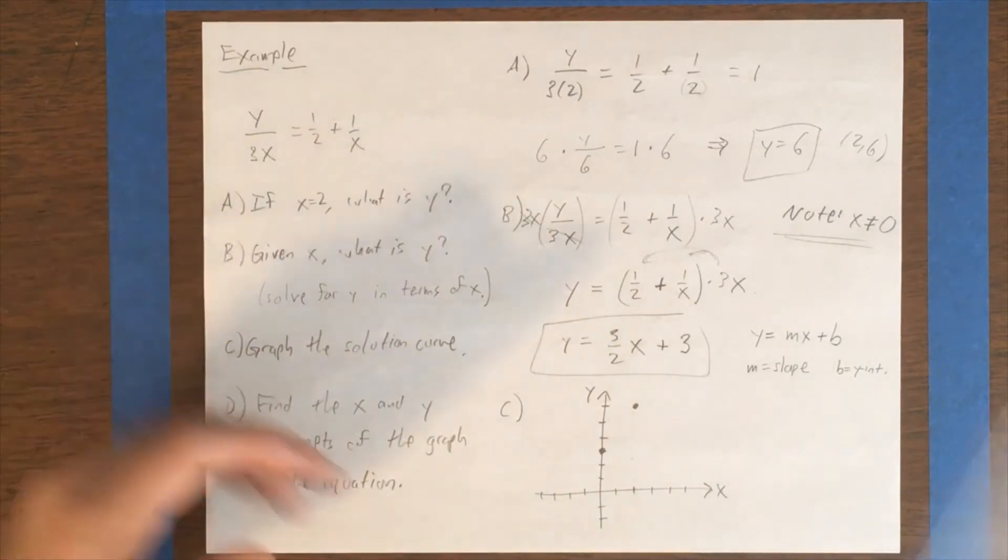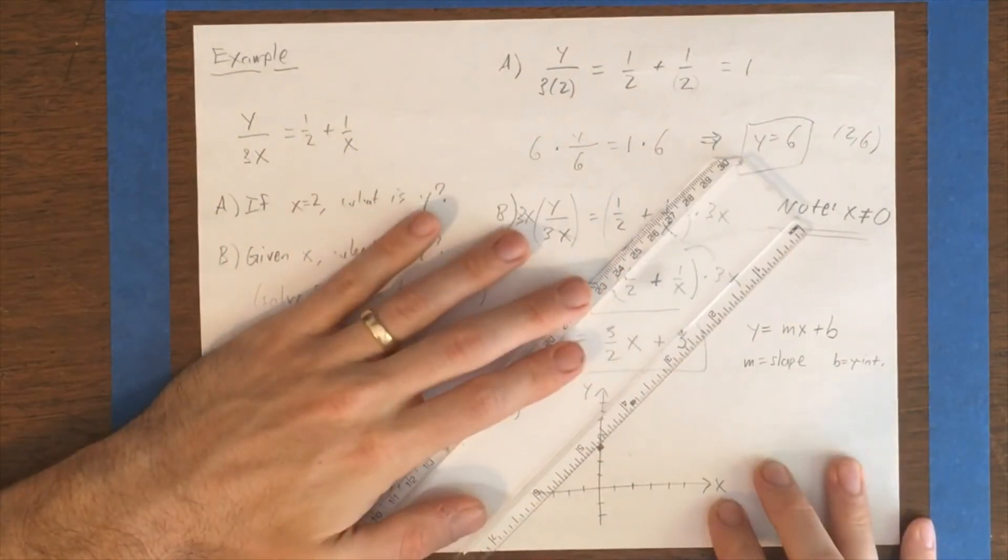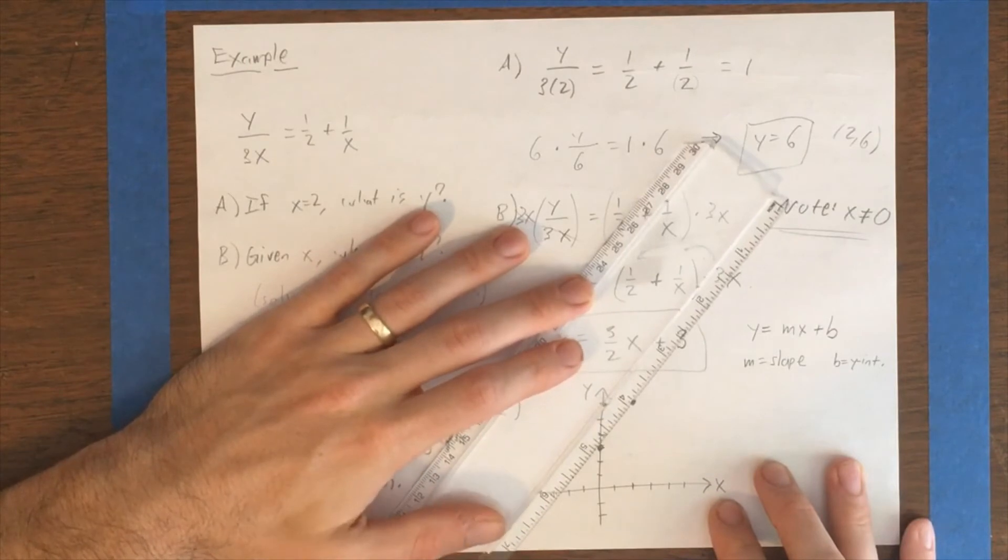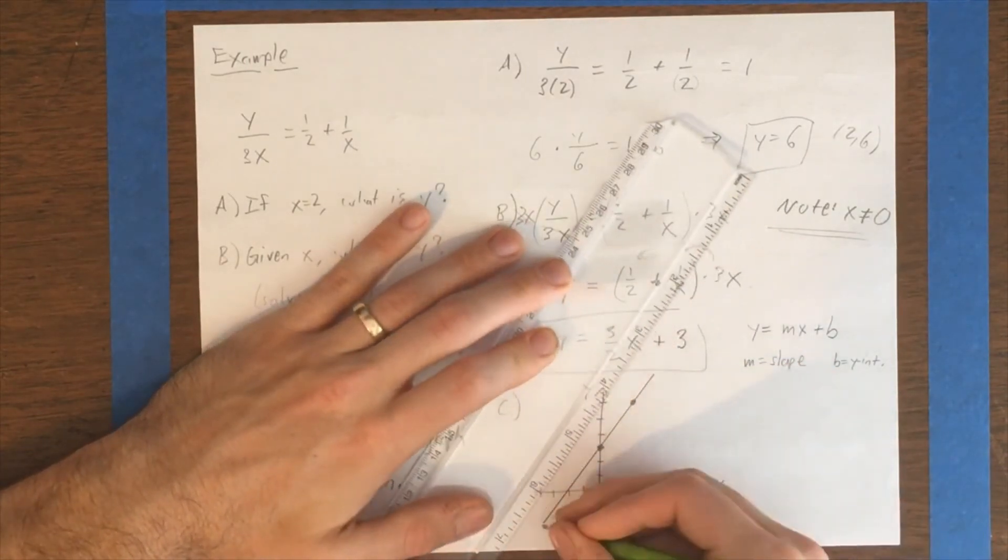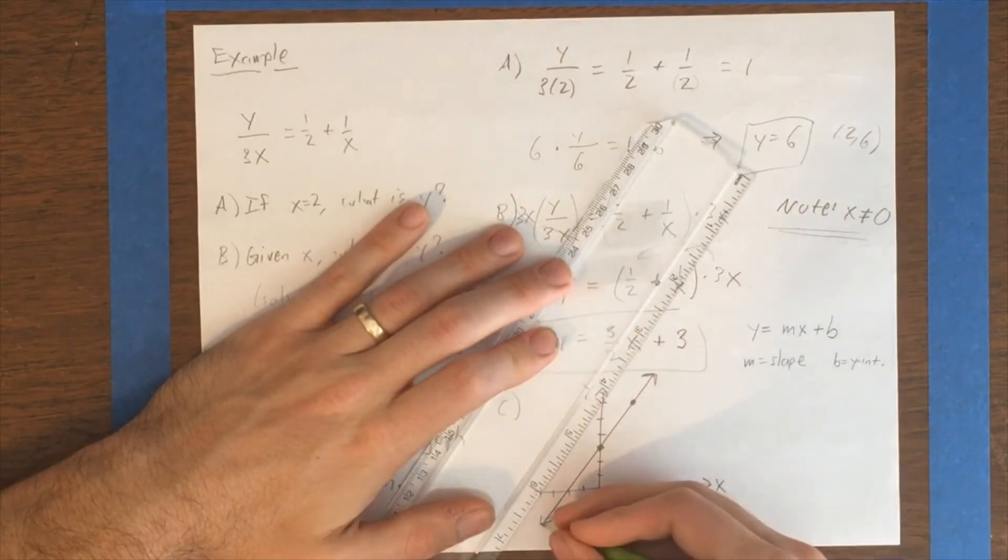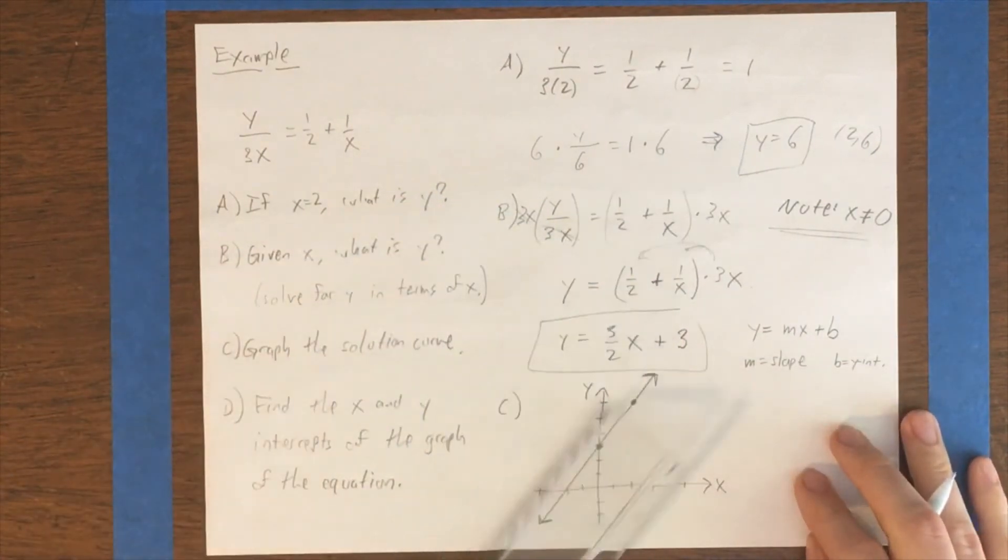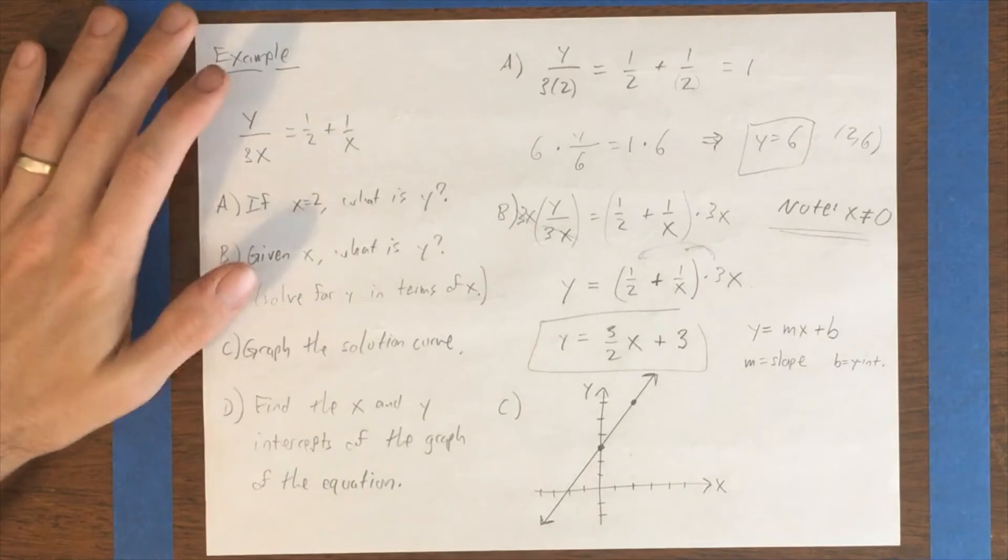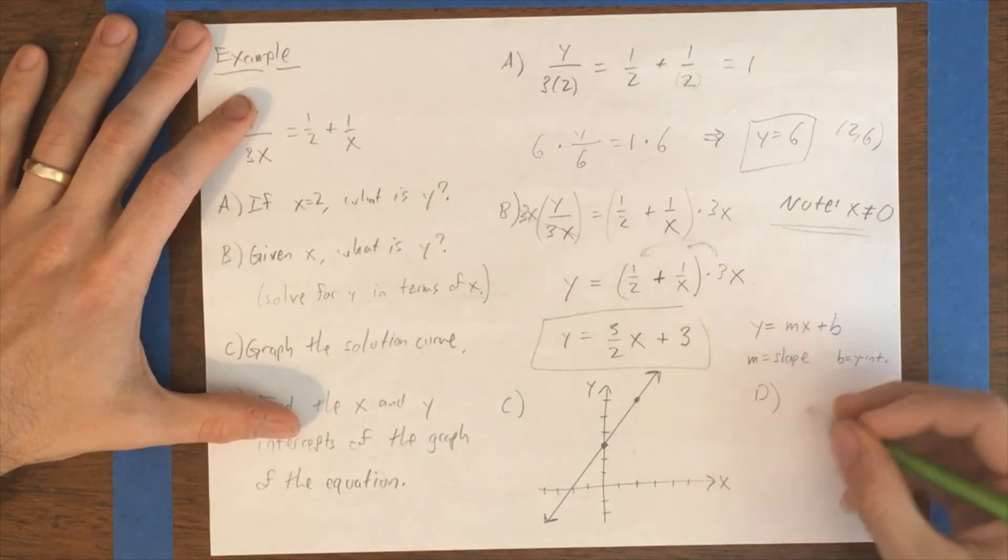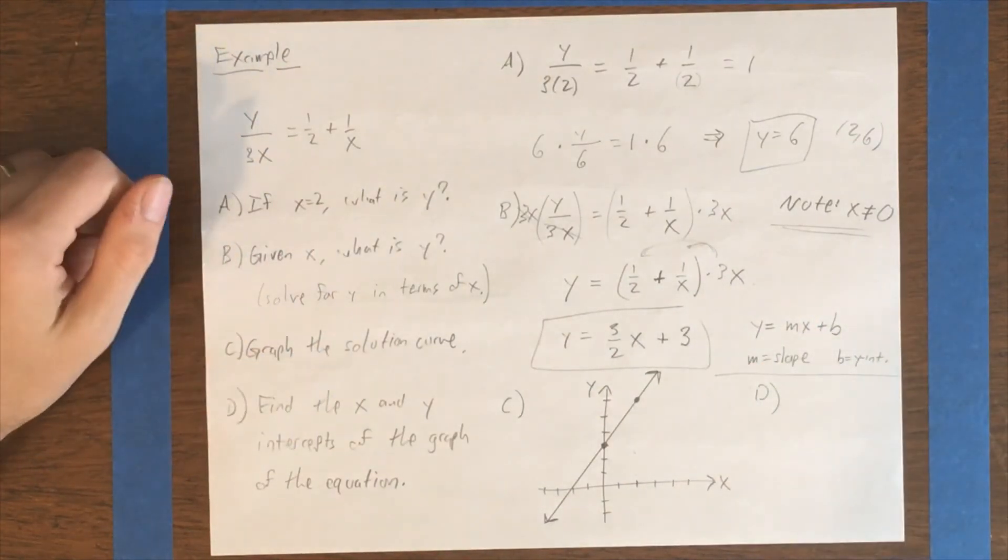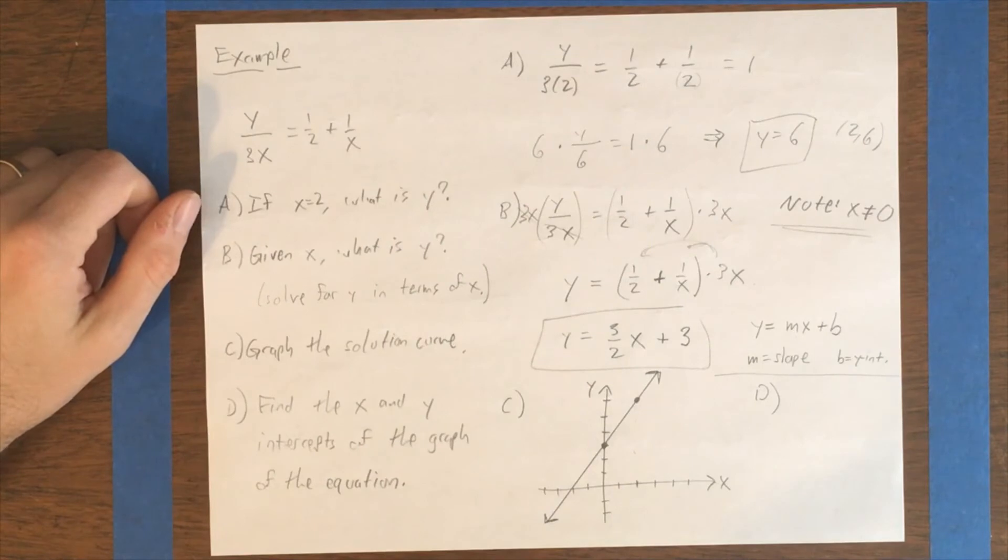And I can come in here with my handy-dandy ruler here and go ahead and graph that line. Pow. There we go. And that's the line, which is the graph of this equation, right? Hmm. Maybe. Although, let's talk about D before we lock that answer in for C. Let's talk about D for a moment.